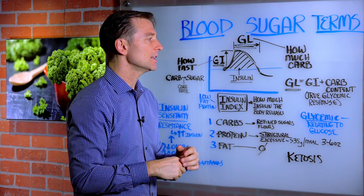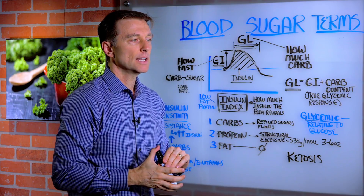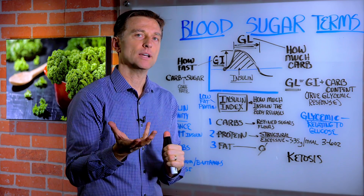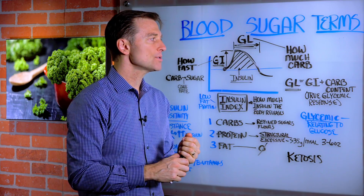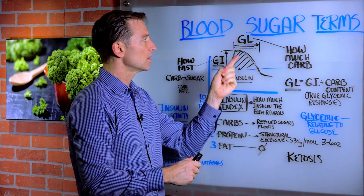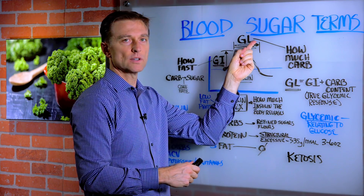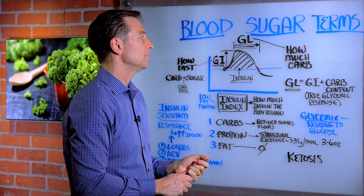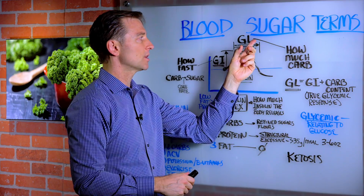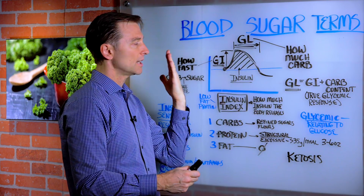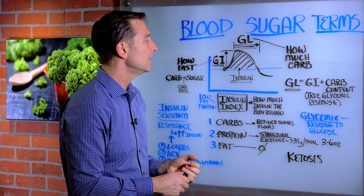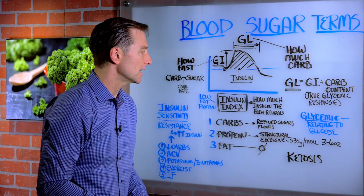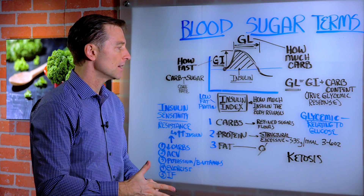Glycemic load is really the true glycemic response. For example, carrots are high in carbohydrate but also high in fiber, so they have a low glycemic load. But a baked potato has a very high glycemic load because it creates a longer duration than something with fiber. So we want to look at both glycemic index and glycemic load because there are some subtle differences.